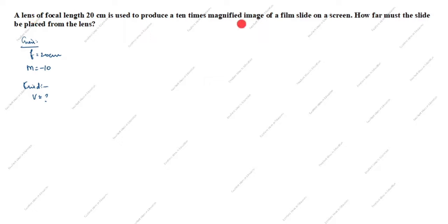We need to find the image distance — the value of v. In this question, only lens is given, not mentioned as concave or convex. But here, 10 times magnified image means real image, and real image means convex lens. So the given question involves a convex lens.